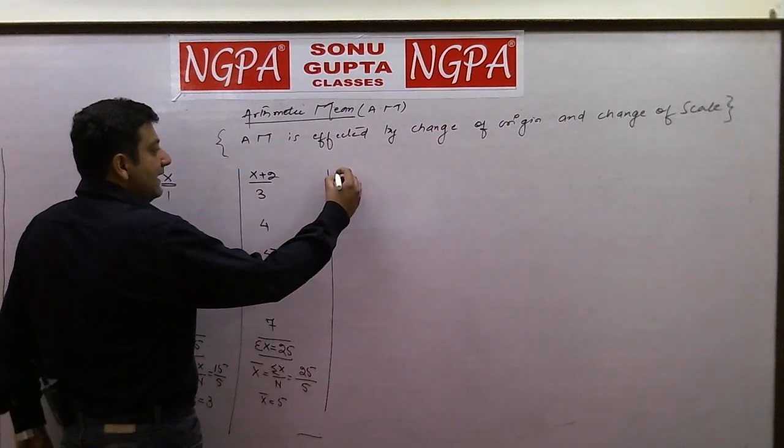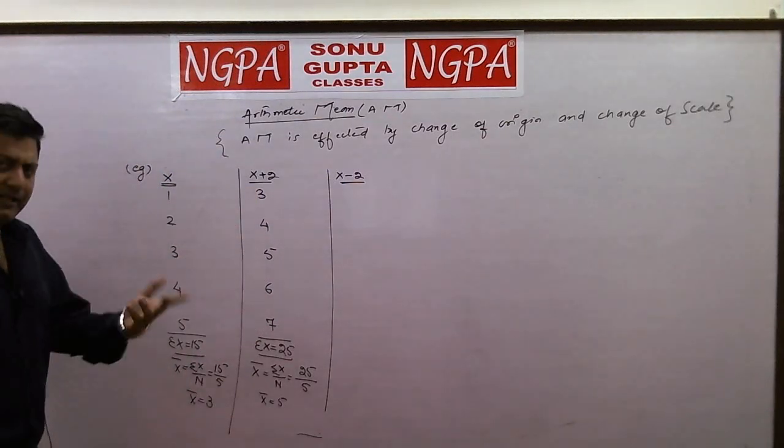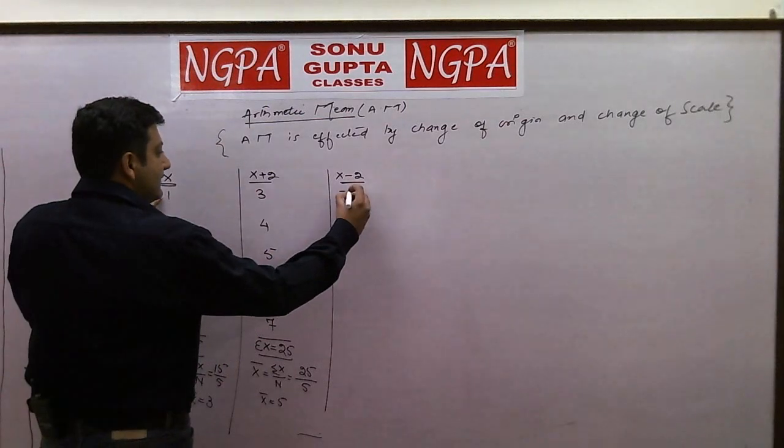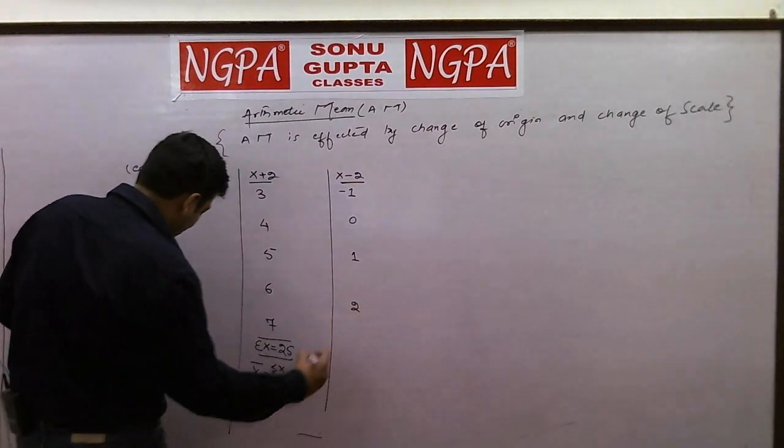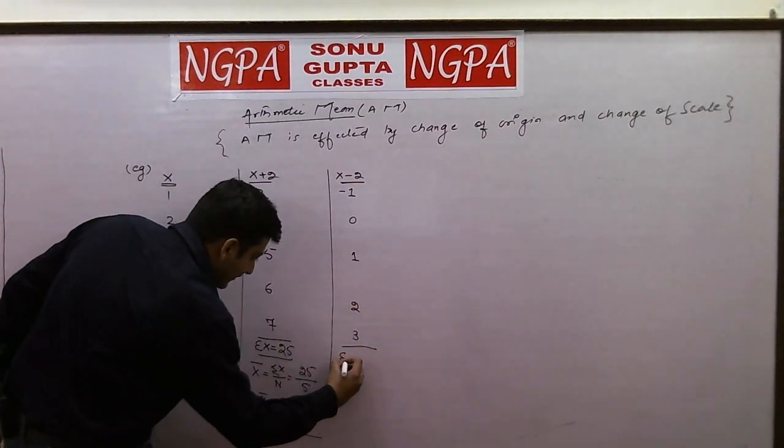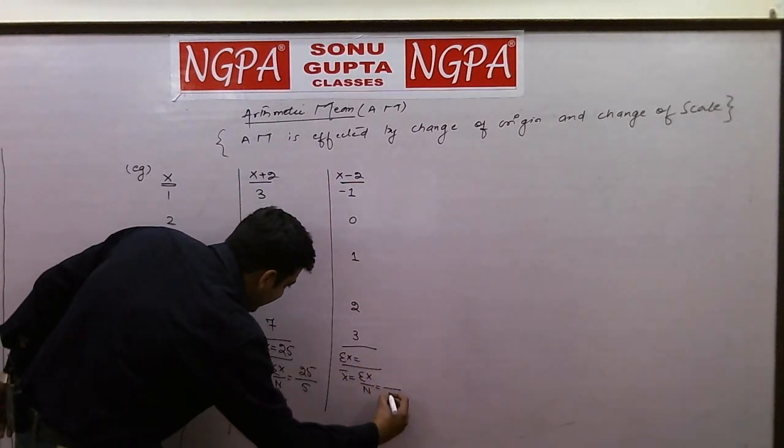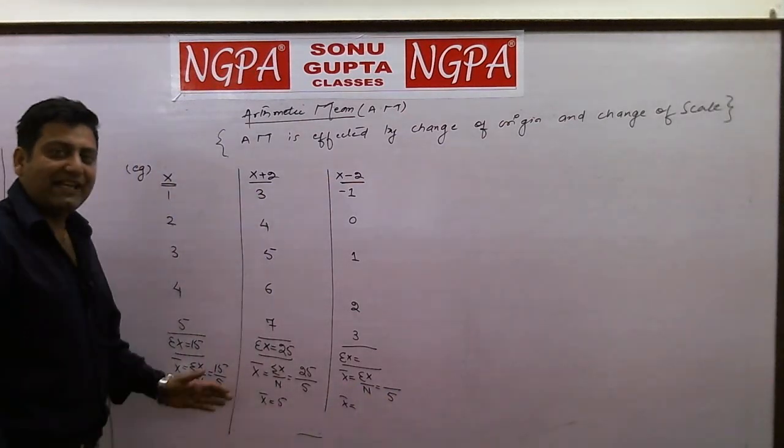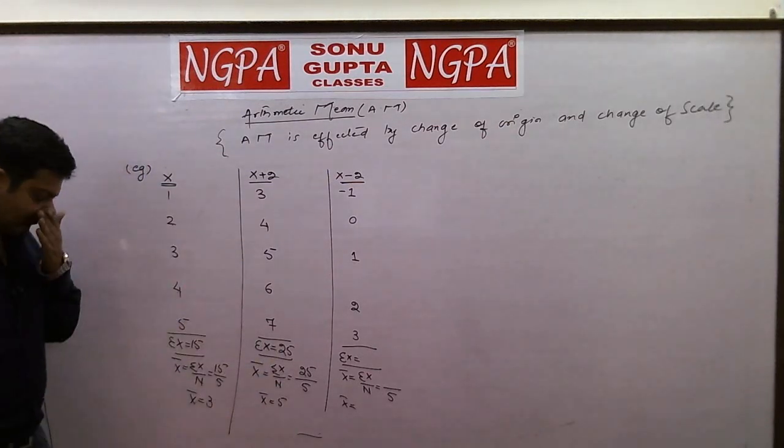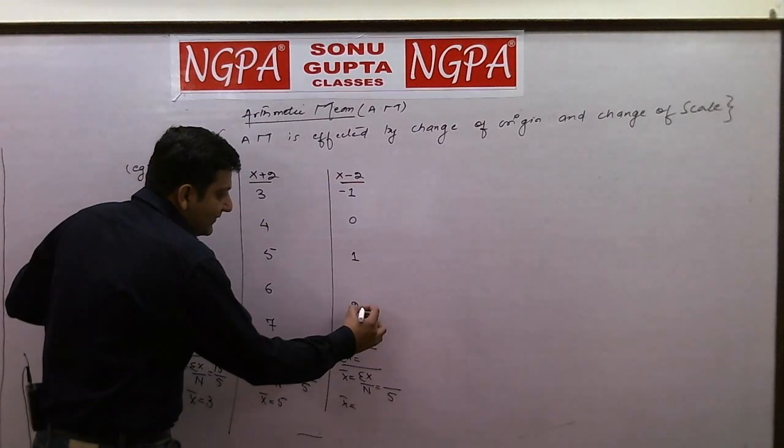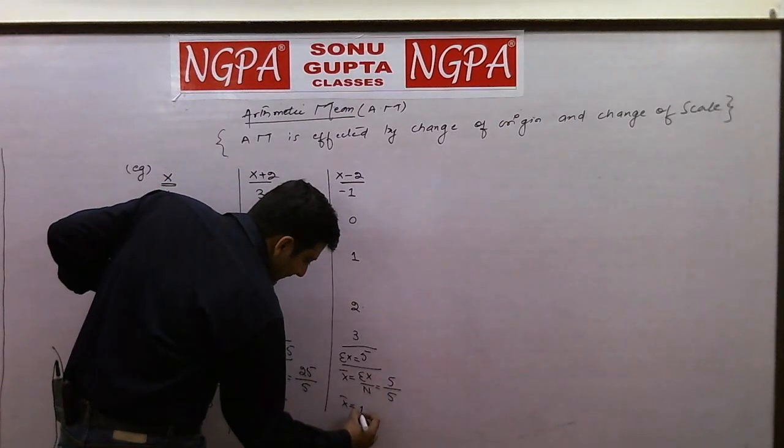Now let's try subtracting 2 from every value of x and see what happens. Let's try by hit and trial. 1 minus 2 is minus 1, this is 0, 3 minus 2 is 1, 4 minus 2 is 2, and 5 minus 2 is 3. Let's calculate the total and then again calculate mean. The number of items will be again 5. 3 plus 2 is 5, 5 plus 1 is 6, 6 minus 1 is 5. So this is 5 by 5, your mean is 1.